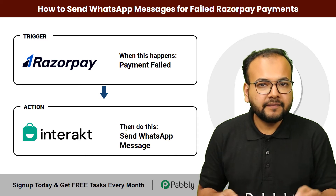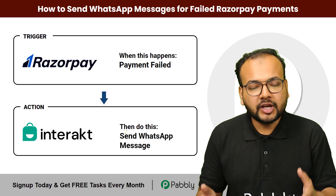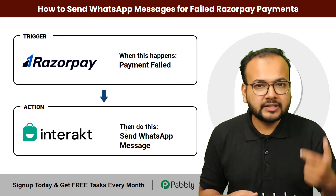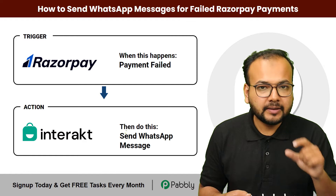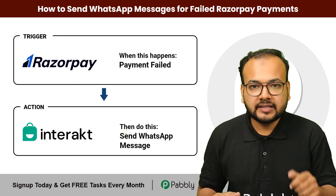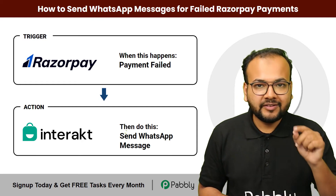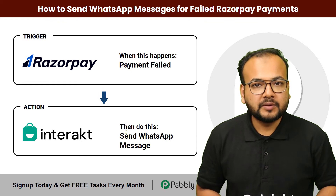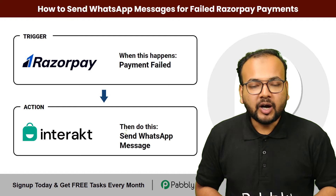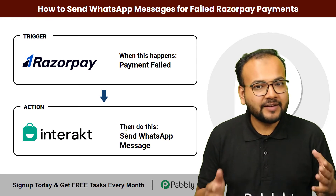Whenever someone's payment fails, the chances are high that you can lose a potential customer. This automation is going to instantly inform the person who is making the payment that it has failed for any reason, so they can take the necessary action and make the payment again. This is going to save your time and improve your chances of making successful payments. I'm going to show you how to set up this automation workflow without any coding — just by a few clicks.